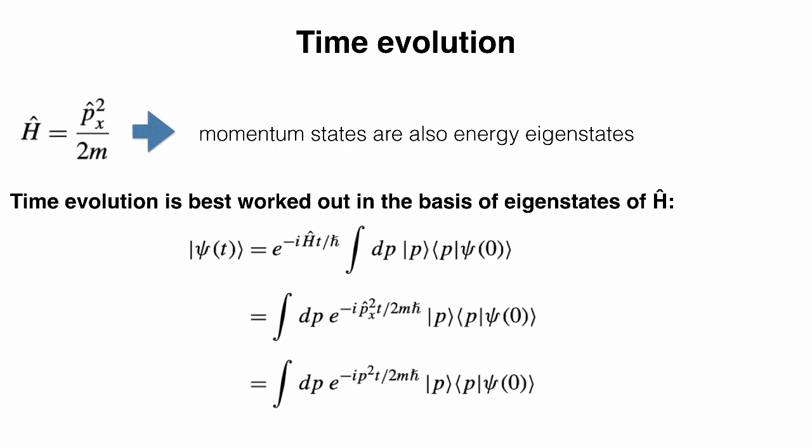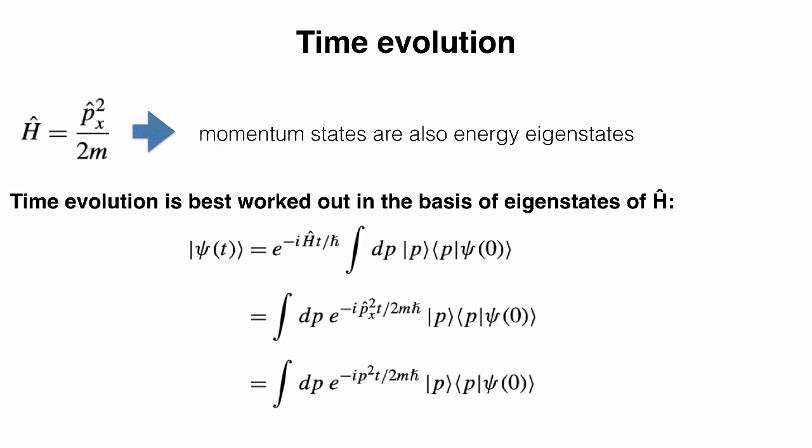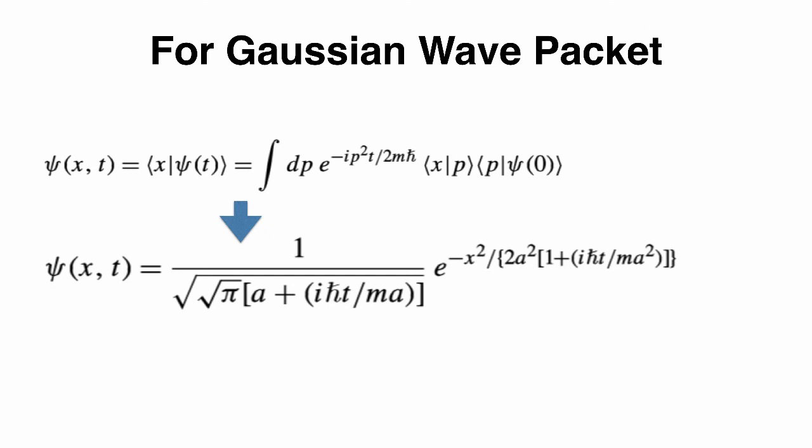We calculate the x-representation of the time-evolved state by projecting on the x-basis. We replace ⟨x|p⟩ with the known complex exponential, and use the known p-representation of the Gaussian wave packet. We end up with three complex exponentials, which can be integrated analytically. We started with a Gaussian wave packet and evolved it in time — and the solution is on screen.